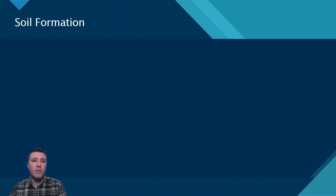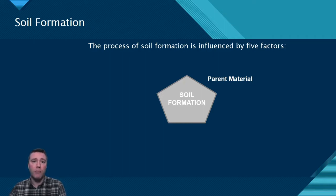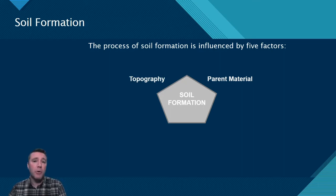Soil formation is influenced by five factors. The first is the parent material that will ultimately provide the inorganic minerals present in soil, and is actually just rock. All three types of rock — igneous, metamorphic, and sedimentary — can serve as the basis for soil formation. However, the physical properties of different types of rock influence the rate at which it breaks down. Igneous rock, for example, tends to break down more slowly than metamorphic, and especially sedimentary rock. Soil formation is also influenced by the topography of the land. In places with steeper inclines, rock tends to be broken down more quickly, since it's more likely that wind, the flow of water, and animal activity will cause it to fall and break into smaller pieces.